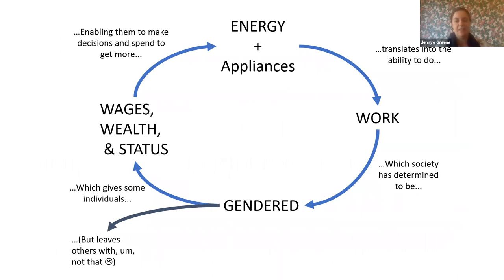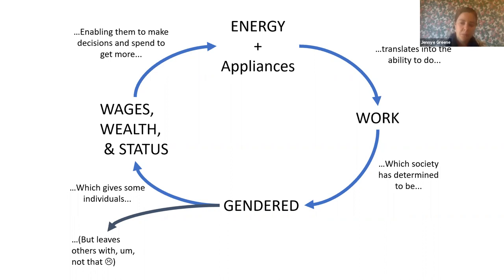From any elementary physics class: energy is the ability to do work. Energy plus appliances translates into the ability to do work, and society has often determined that work is gender-segregated. Some work receives monetary compensation, wealth accumulation, and prestige, while other work — care work, subsistence agricultural production, reproductive work like raising children — is still work but doesn't lead to the same outcomes. Energy and appliances play a key role in setting up this economic cycle, and how it differs for men and women depending on context and norms is important to keep in mind.